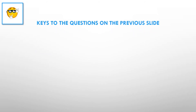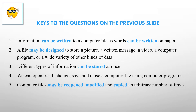Here are the answers to the questions on the previous slide. Information can be written to a computer file as words can be written on paper. A file may be designed to store a picture, a written message, a video, a computer program, or a wide variety of other kinds of data. Different types of information can be stored at once. We can open, read, change, save, and close a computer file using computer programs. Computer files may be reopened, modified, and copied an arbitrary number of times.